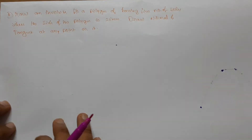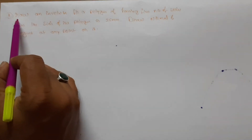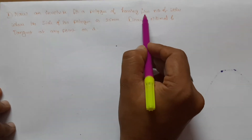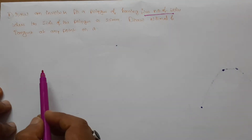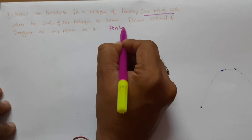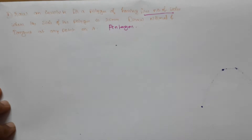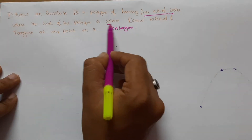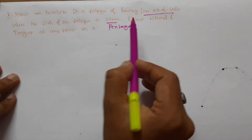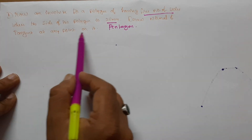So I want to draw an involute for a polygon having 5 number of sides — that is a pentagon — where the side of the polygon is 25 mm.